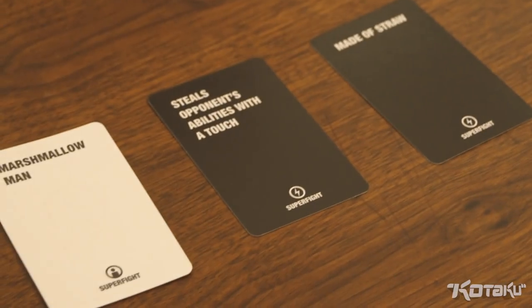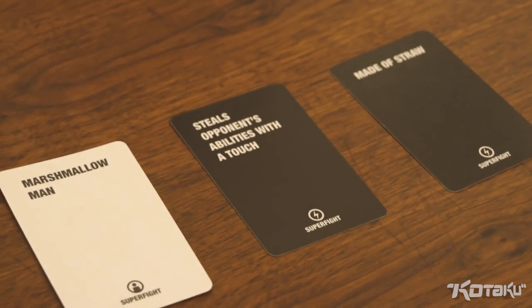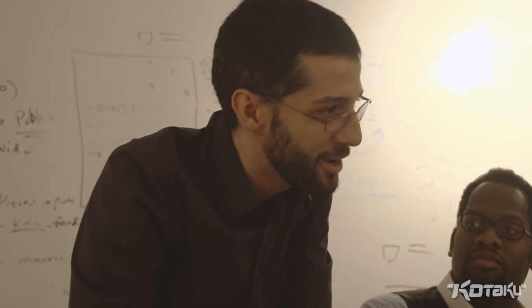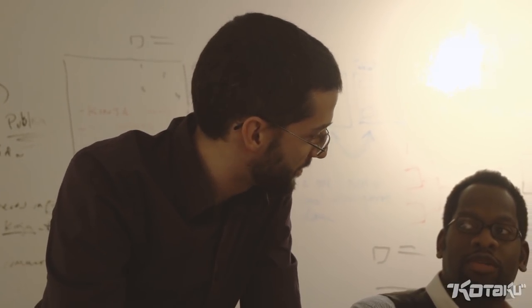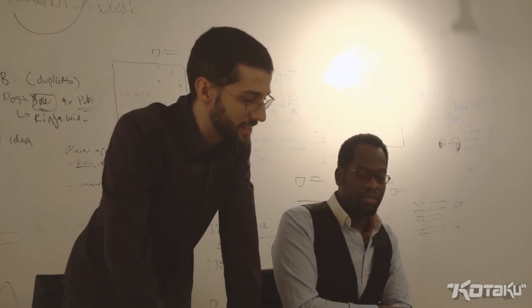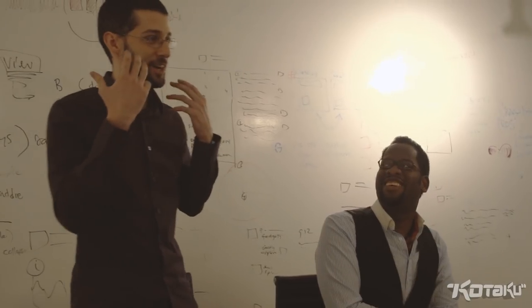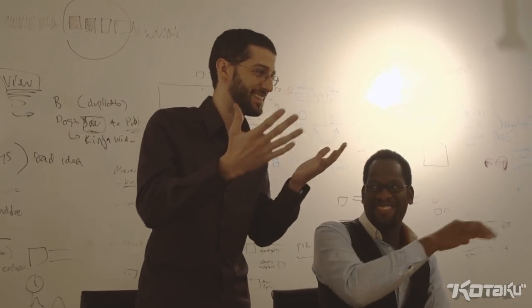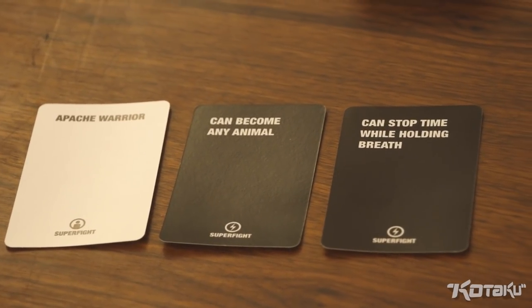Girl Scout relies on sonar to see, relies on heat vision to see. So I guess you could either take that as they cancel each other out and it's just a blind Girl Scout, or a Girl Scout with both sonar and heat vision. Yeah, which would be tough to fight. Wait, you mean like thermal vision kind of vision? Like the Predator? I think so. Like a bat and a Predator. So we have an Apache warrior who can become any animal and can stop time while holding their breath.